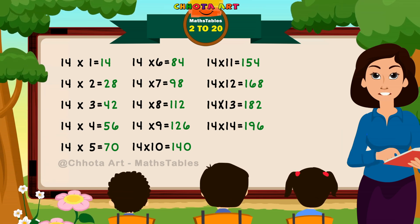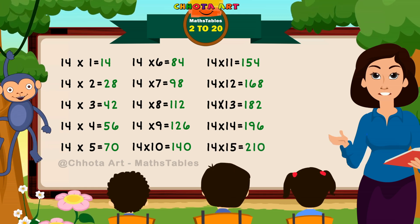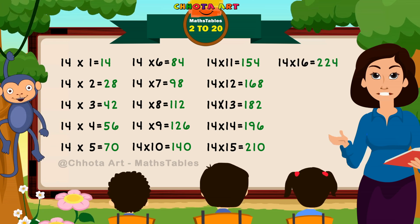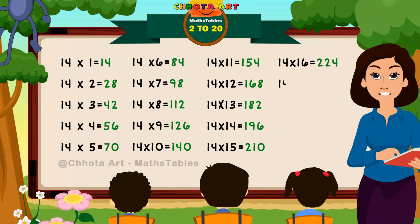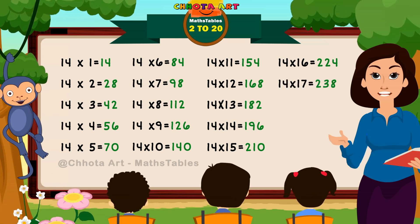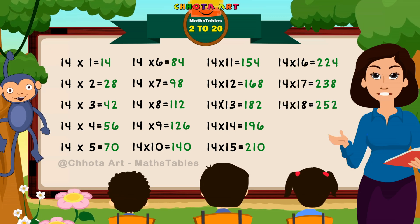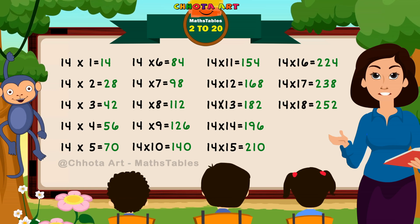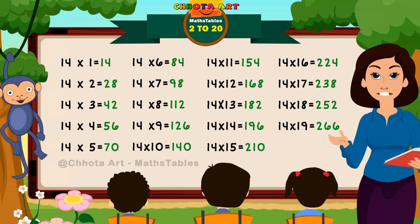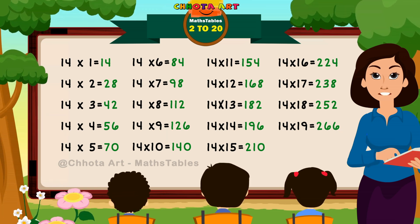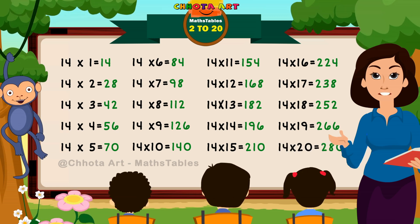14 fifteens are 210. 14 fifteens are 210. 14 sixteens are 224. 14 seventeens are 238. 14 seventeens are 238. 14 eighteens are 252. 14 eighteens are 252. 14 nineteens are 266. 14 nineteens are 266. 14 twenties are 280. 14 twenties are 280.